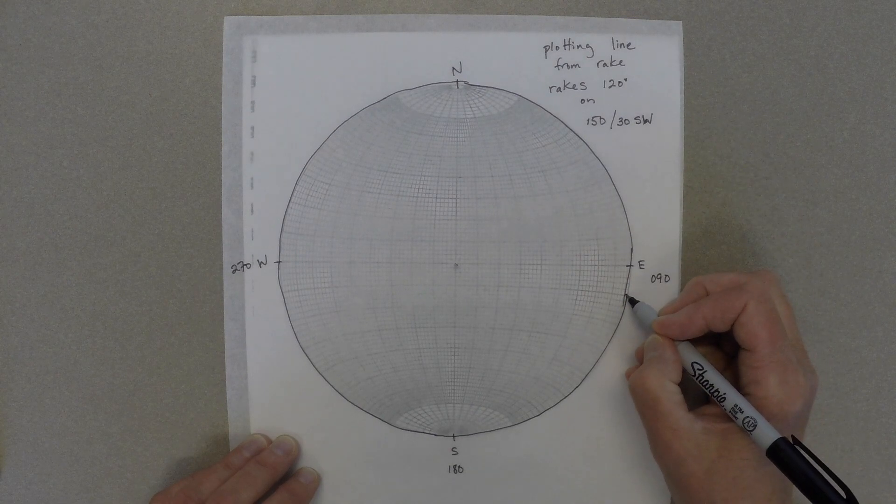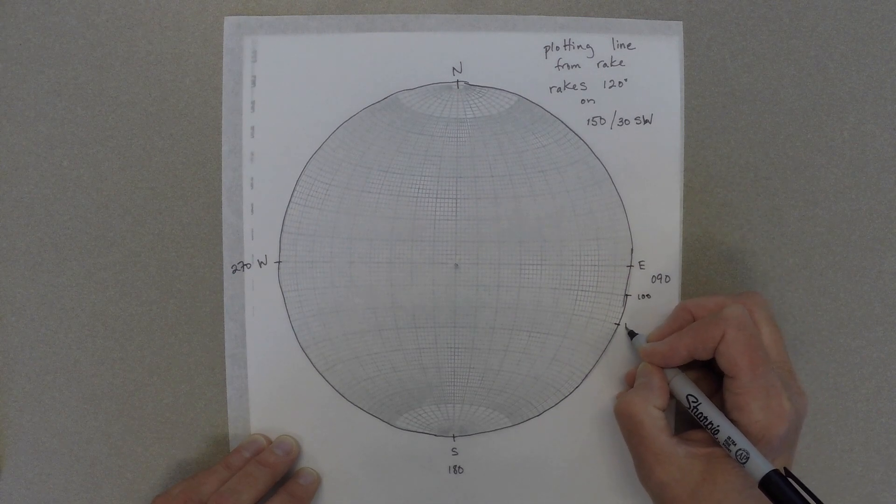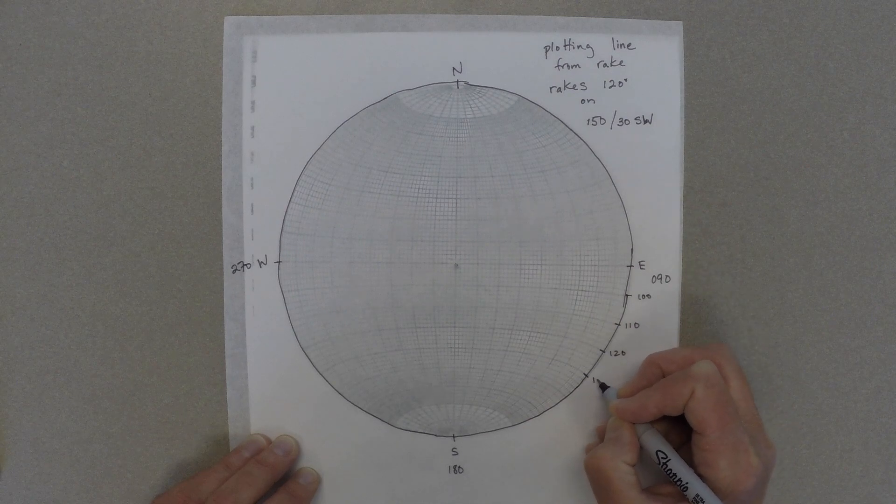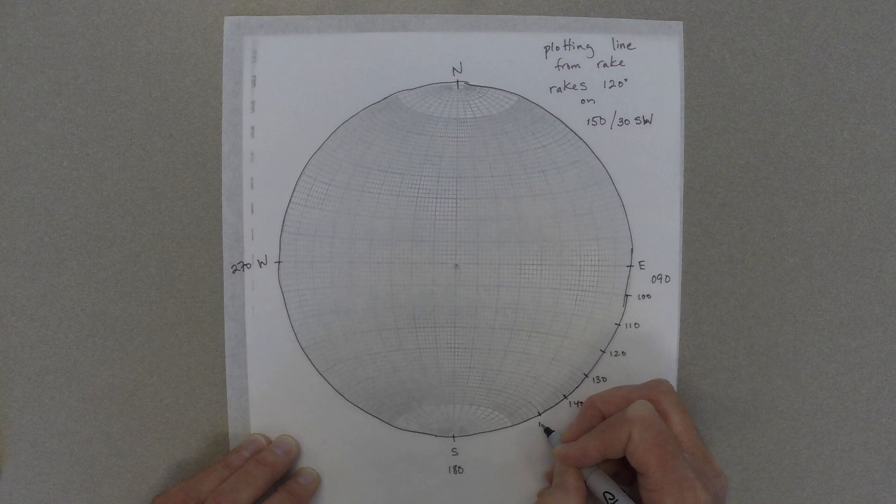We're going to start by plotting our plane. So in this case, the plane has a strike of 150 degrees, so we're going to count around the perimeter of the circle from 90 up into 150 and make a tick mark there.